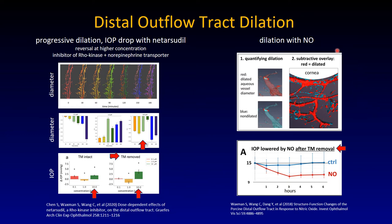Dilating with nitric oxide works in a similar fashion. After removal of the trabecular meshwork, one can still see a pressure drop. One can see — shown in red here — the outflow vessels dilate.